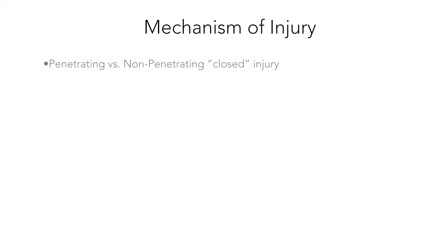Related to the causes of injuries are the mechanisms of the traumatic brain injury. Specifically, there are penetrating and non-penetrating, also known as closed, head injuries. A penetrating injury is exactly what it sounds like: some object has penetrated through the skull and the surrounding protective layers to impact the brain tissue.